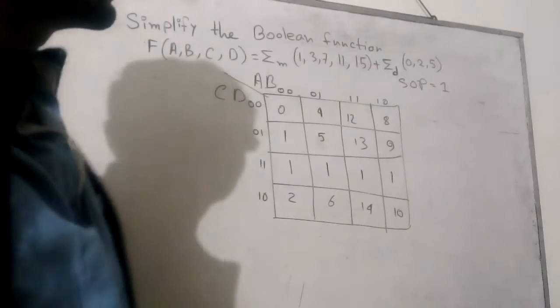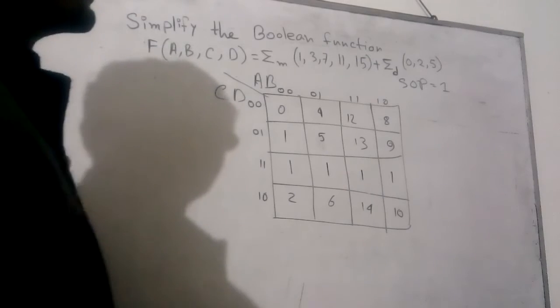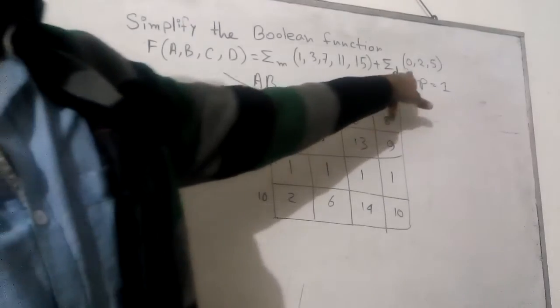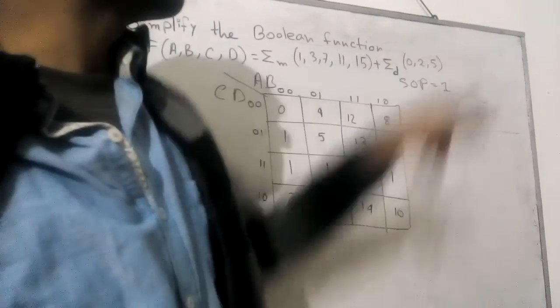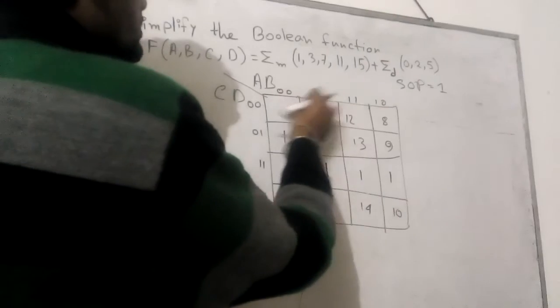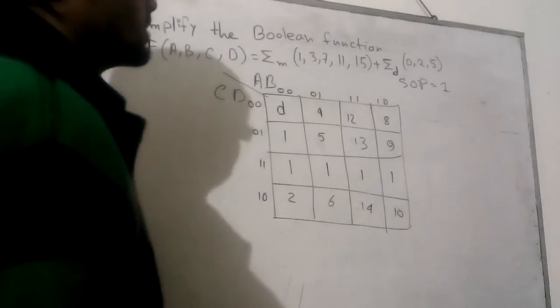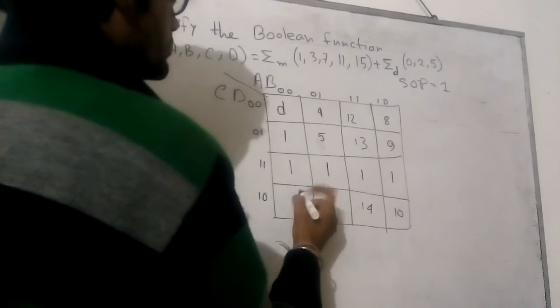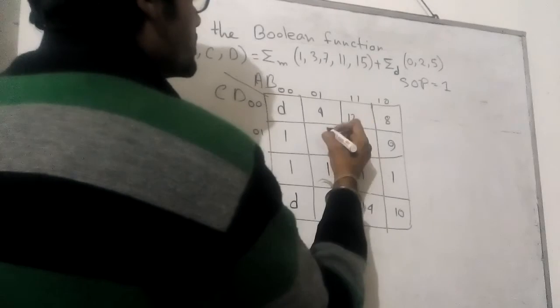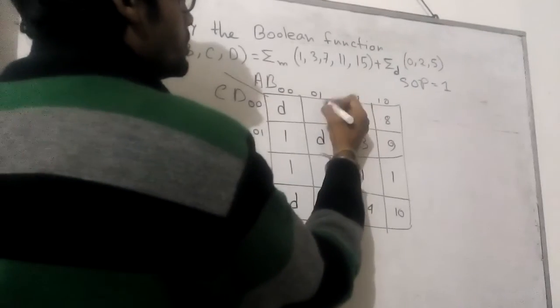In position 7 I write 1. In 11, again 1. In 15 I have to write 1 here. And in the don't-care case, 0, 2, 5, we have three don't-care values. So in place of 0 I have to write d. D represents don't-care. Then 2, I have to write d. And 5, I have to write d. Other values will be 0.